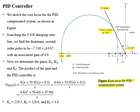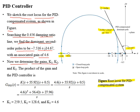After designing the PI controller, we sketch the root locus for the PID compensated system as shown in the figure. Along the line of constant damping ratio, the dominant second-order poles are located at minus 7.516 ± j14.67, with an associated gain of 4.6. We then determine the gains of the PID controller: K1, K2, and K3. The product of the gain and the transfer function of the PID controller gives GPID of S, where K1 equals 259.5, K2 equals 128.6, and K3 equals 4.6.